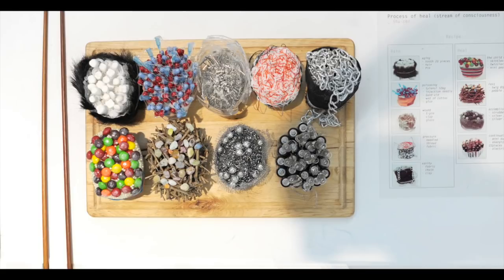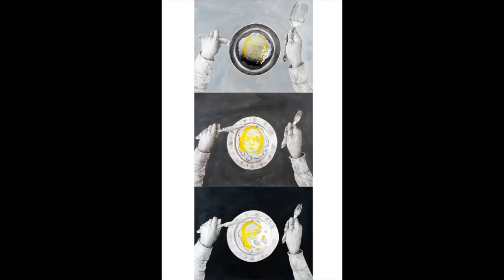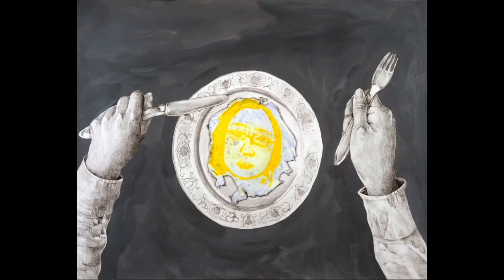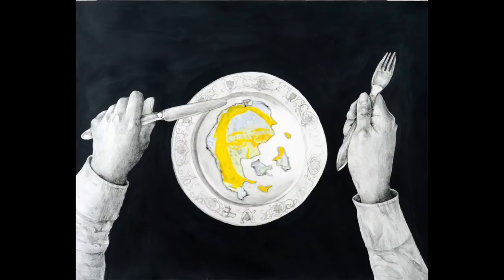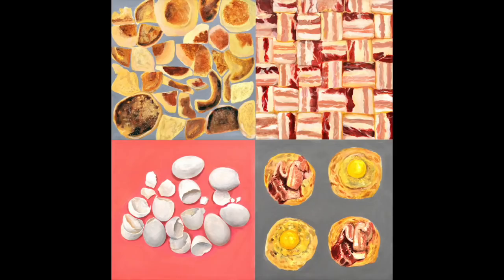This is a series of three-dimensional models inspired by the shape of garlic. This is a series of portraits with the student's image made in the shape and texture of an egg. Also featured: a triptych about steak and a series of paintings about eggs, bacon, and English muffins.